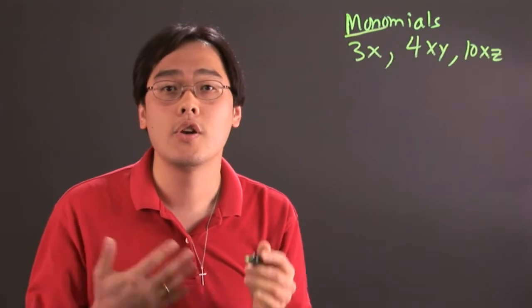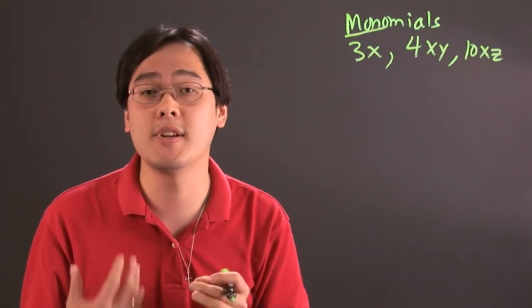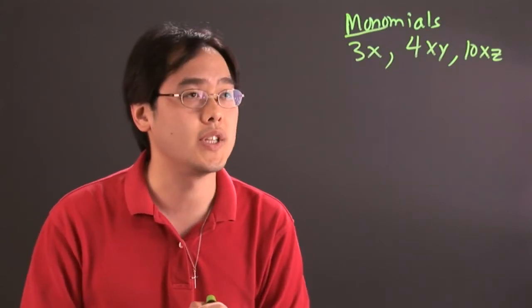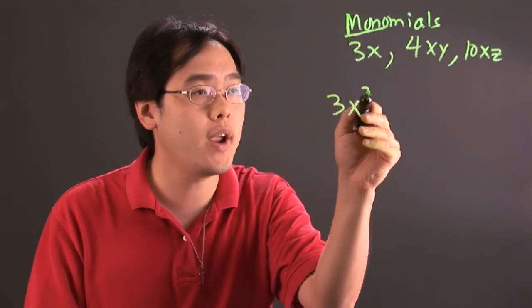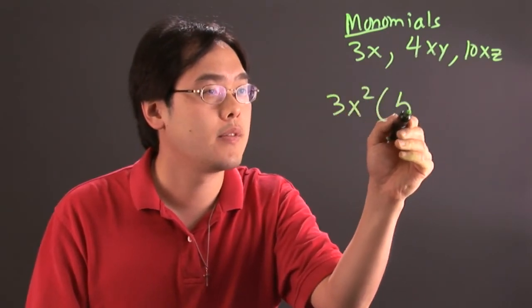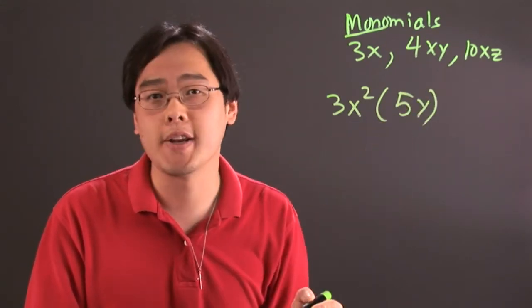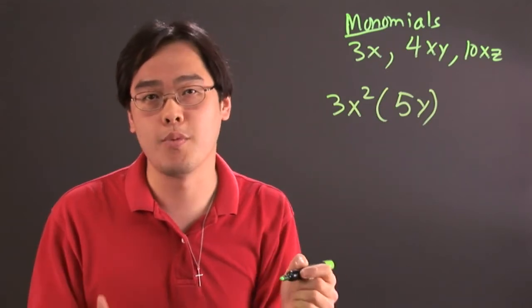Now when it comes to multiplying monomials, you can only combine things that have the same bases. If they have different bases, you don't have a choice but to just join the terms together. So for example, if you have 3x squared times 5y, you can only multiply and combine the appropriate like terms.